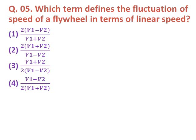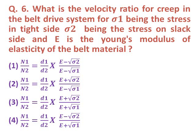Question five: Which term defines the fluctuation of speed of a flywheel in terms of linear speed? The correct answer is option one: two times (v1 minus v2) upon (v1 plus v2).